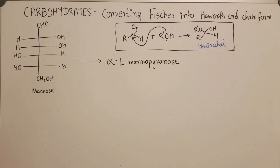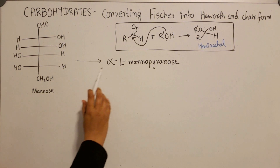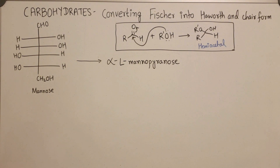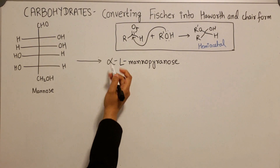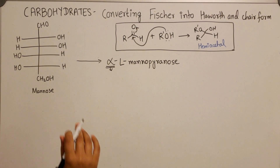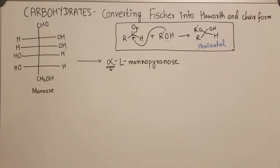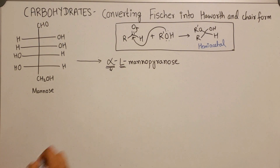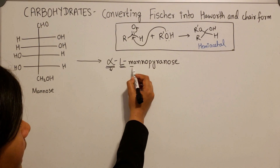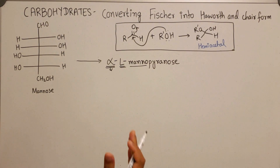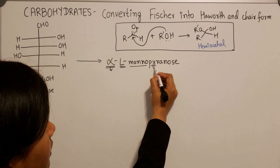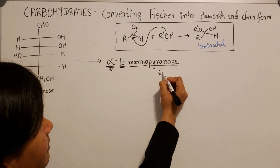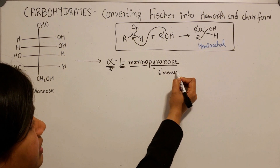Say for example you are asked in an exam to convert mannose into alpha-L-mannopyranose. Let's break this down. Alpha indicates where the substituent will be placed at the anomeric position. L means it should be derived from an L sugar. Manno is derived from mannose, and pyranose means a six-membered ring containing oxygen.